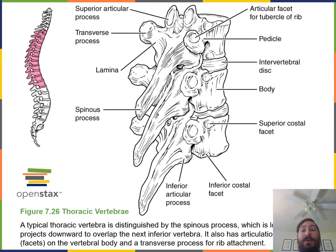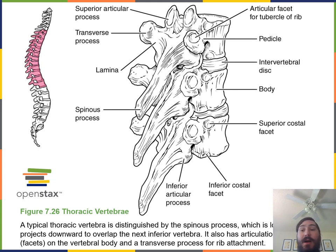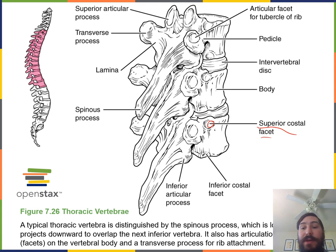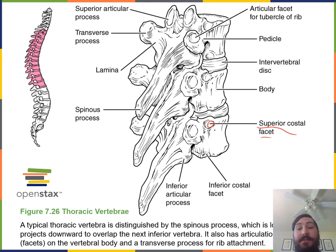The most unique feature of thoracic vertebrae that distinguishes them from other vertebrae is they have costal facets — small indentations that are the locations where the ribs attach. So the ribs attach to the thoracic vertebrae at those costal facets.